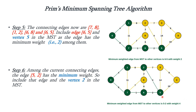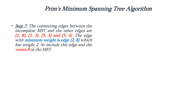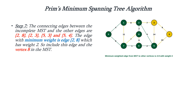Now the possible vertices which can be connected to 2 and 5 are checked. With 2 you can either add 8 or 3; for 5 we can either add 3 or 4. Among these, the minimum weight is between 2 and 8, which is 2. So we are including edge 2 to 8 into the MST.